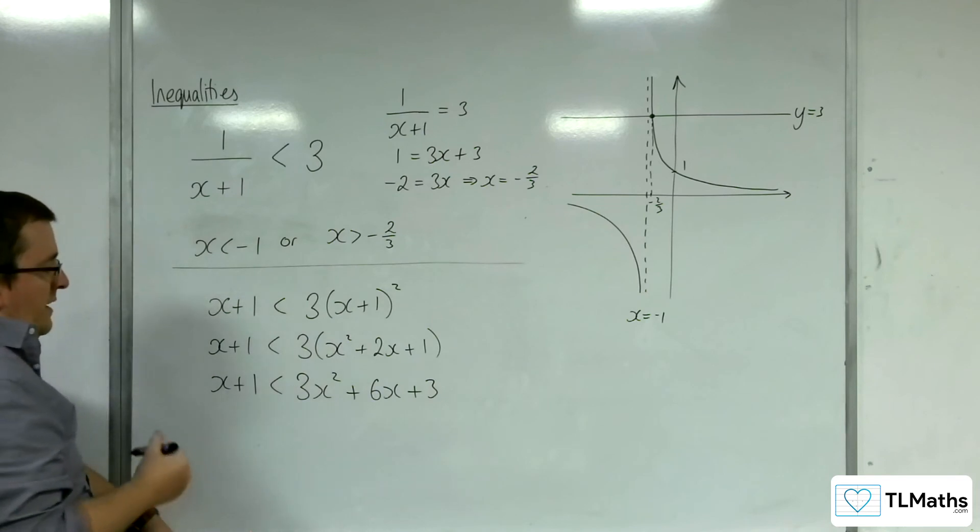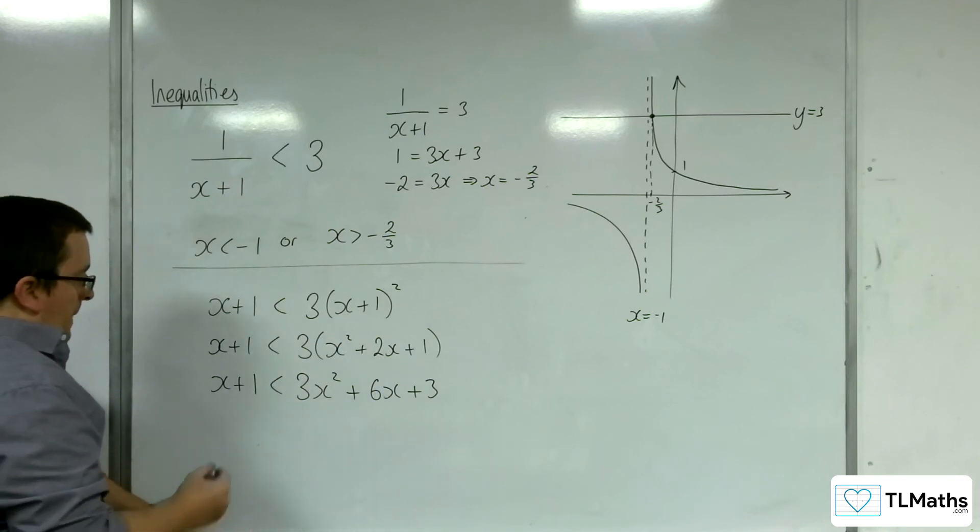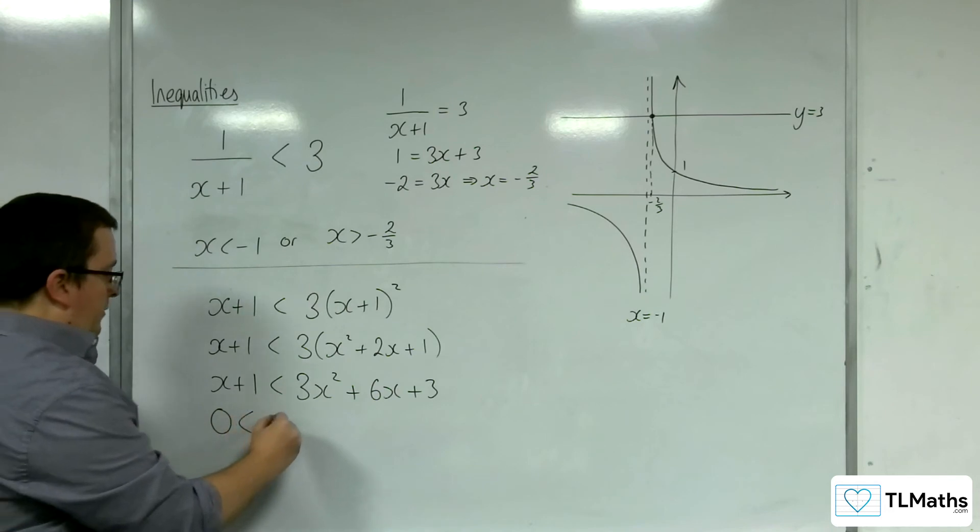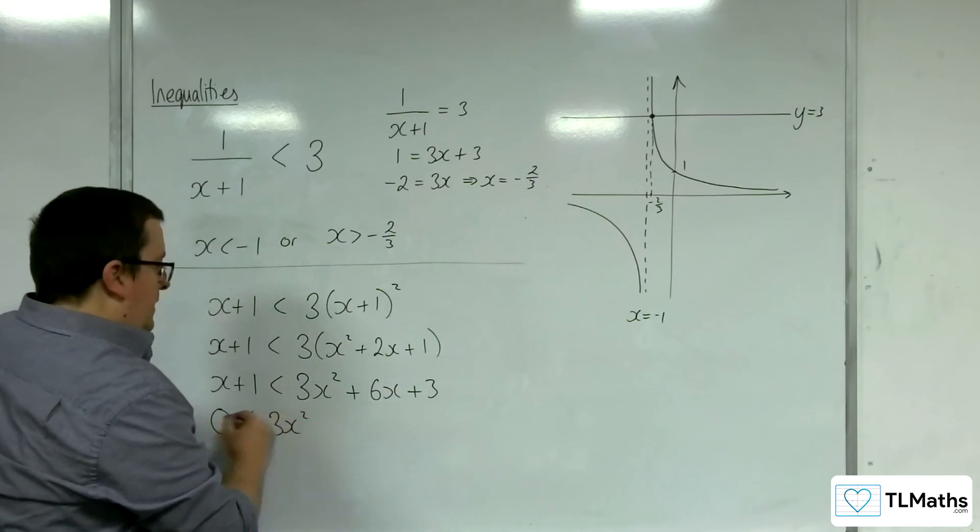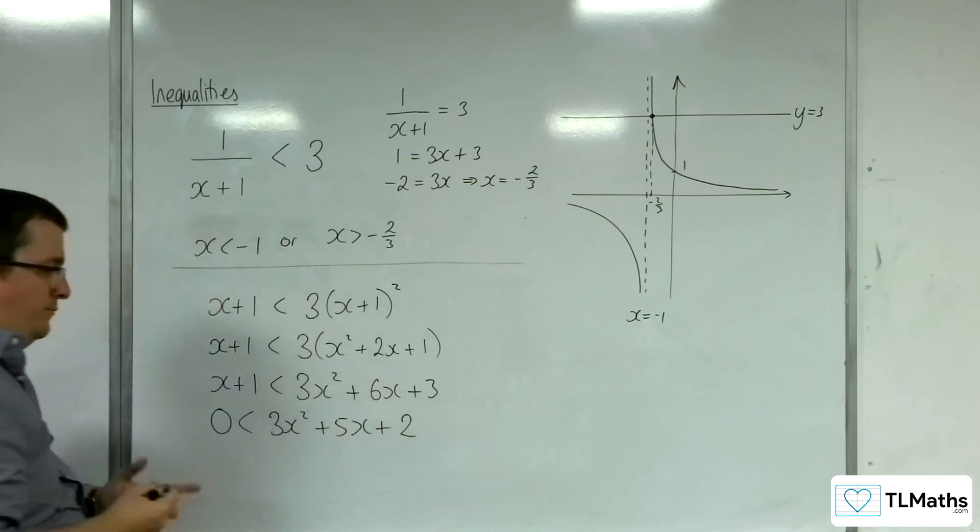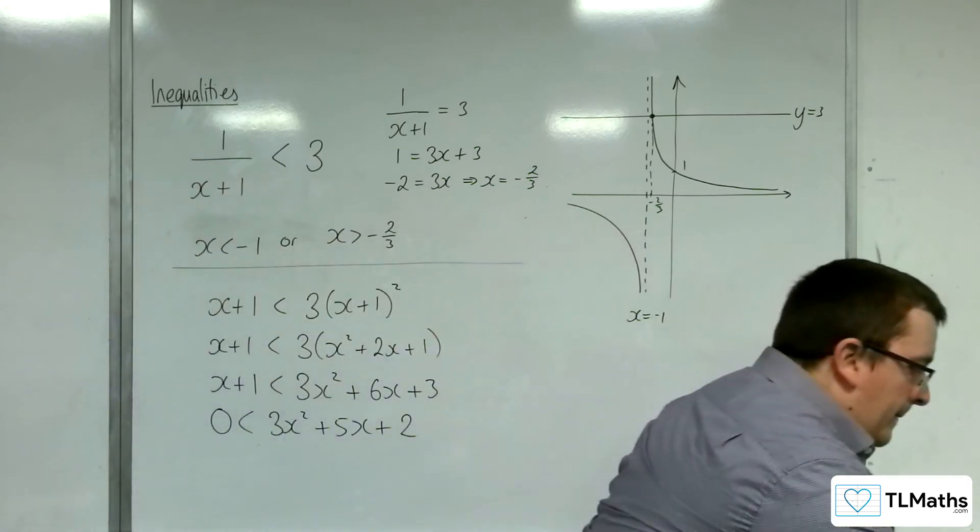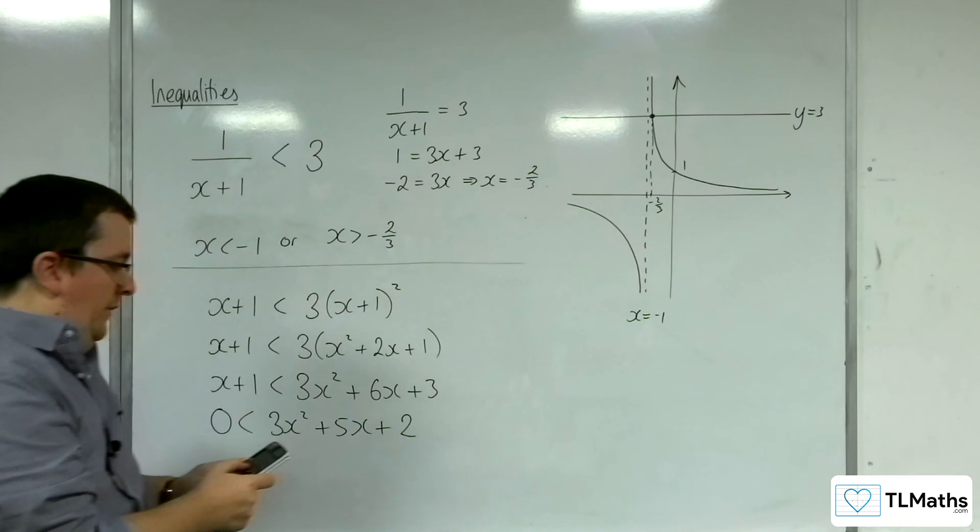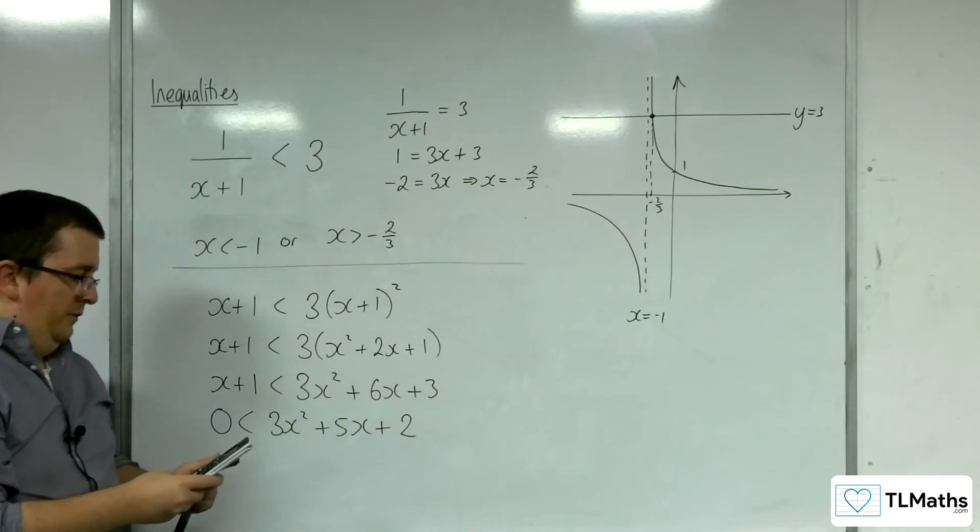So, 3x squared plus 6x plus 3. Right, then I'm going to have to move everything on to one side. I'm going to move everything on to the right-hand side. So, we've got 3x squared plus 5x plus 2. Let's use my quadratic solver.